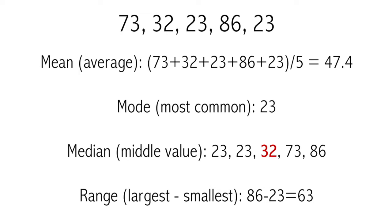Mean is the average value. How you find the average is you add each of the individual elements together and divide by the number of elements. So we find the sum of all of these numbers — there are 5 numbers — so we divide by 5 and we get the mean.